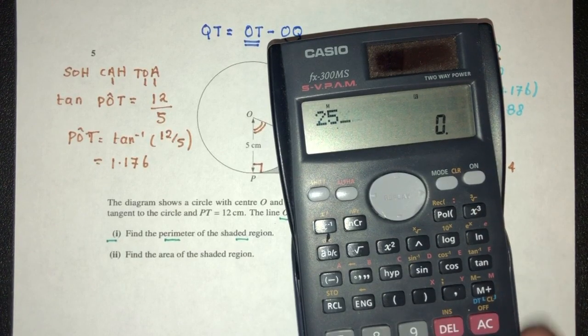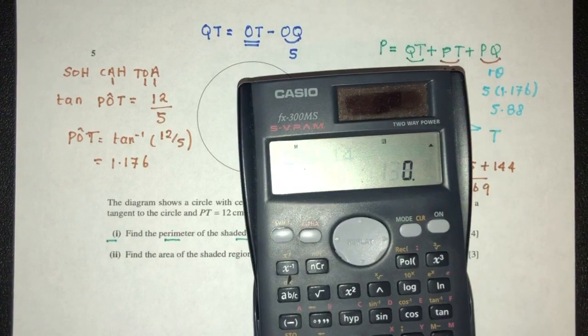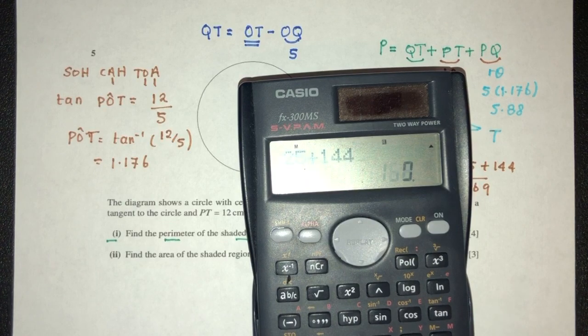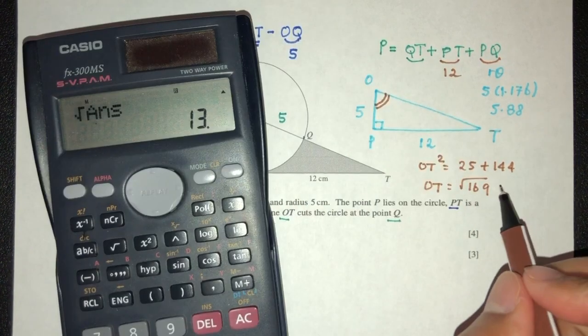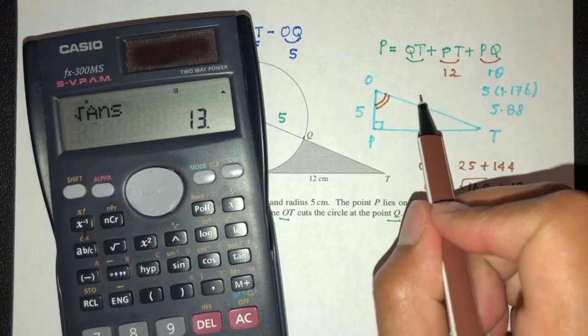Let's check. 25 plus 144 will be 169. Root of that will be 13. OT is the value of 13.